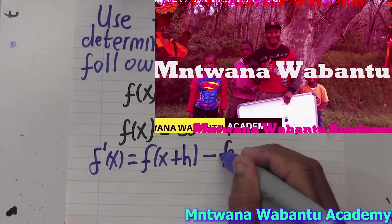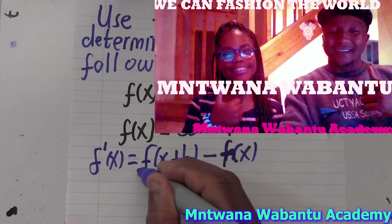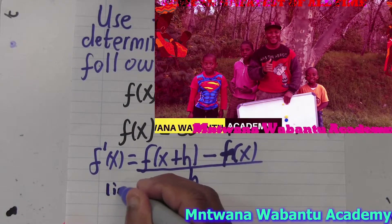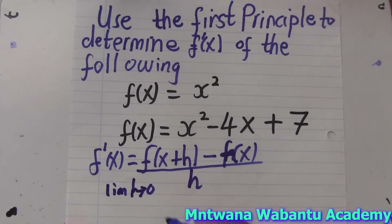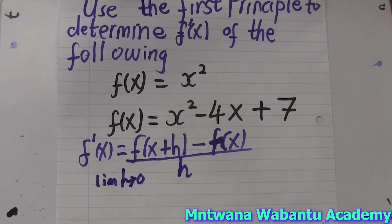And then f(x+h) minus f(x) over h, with the limit as h approaches zero. So memorize that formula right there. Now let's go.